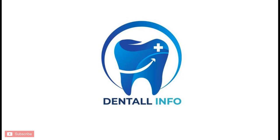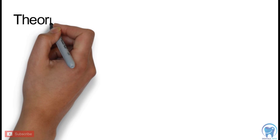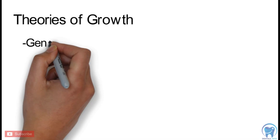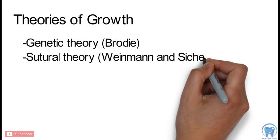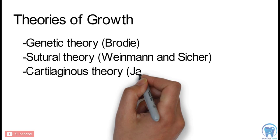As mentioned in the previous video, the various theories of growth are: first was the genetic theory given by Brody, the sutural theory given by Wynman and Sitcher, then the cartilaginous theory which was given by James Scott, and the most important theory which is the Functional Matrix Theory which we will be discussing today.